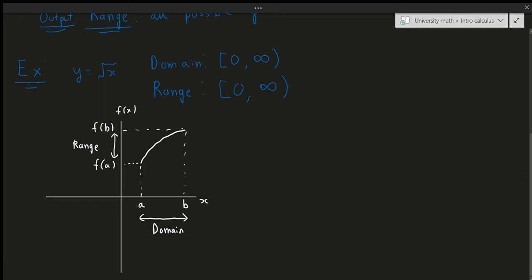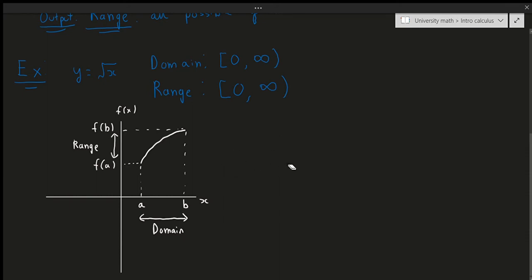Generally, instead of writing y equals the square root of x, you can also write f(x) equals the square root of x. They're the exact same thing, because they both describe the output — they're both describing the exact same thing.